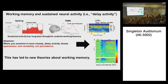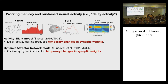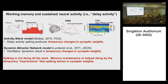A couple new theories about working memory. Two of the major ones are the activity-silent model of Mark Stokes and the dynamic attractor model of Michael Lundqvist. Both these models say essentially the same thing: that in between spiking — spiking is actually very sparse during working memory — there are changes in synaptic weights, so that the spiking leaves an impression in the network that helps carry the memories between these sparse episodes of spiking. This has very profound implications for how working memory works.